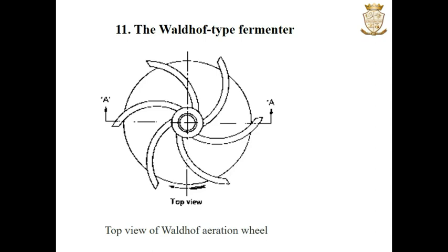The Waldhof type bioreactor or fermenter is used for growing yeast on sulphite waste liquor. This type of fermenter is made of stainless steel and has a central draught tube. Aeration is through a rotating pinwheel type aerator through which air is introduced into the fermenter. The image shows the top view of such an aerator.